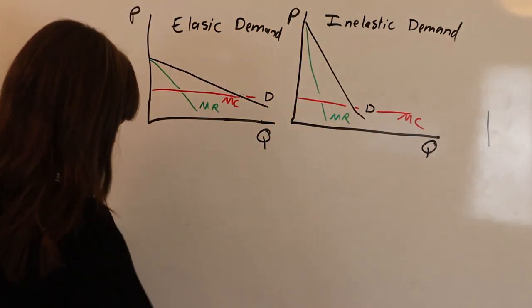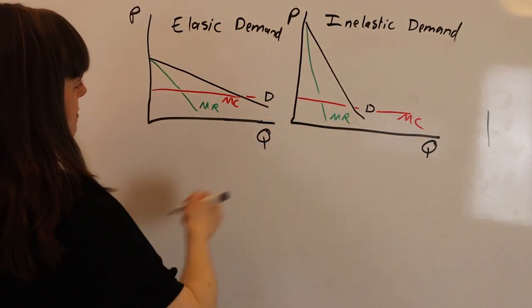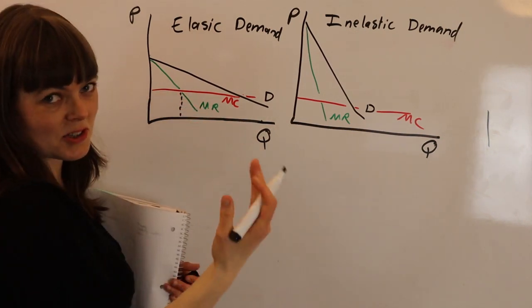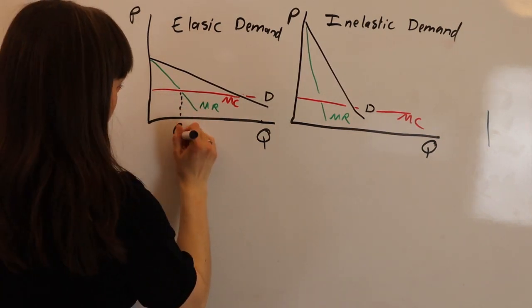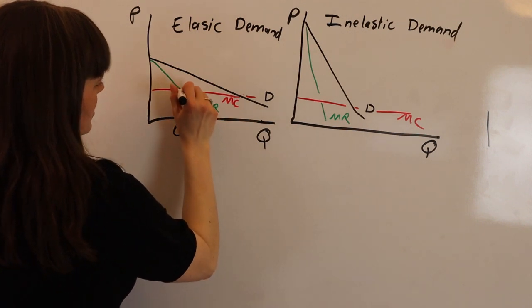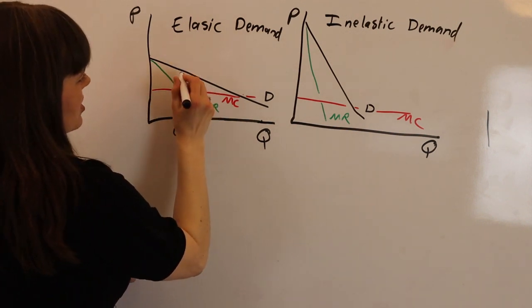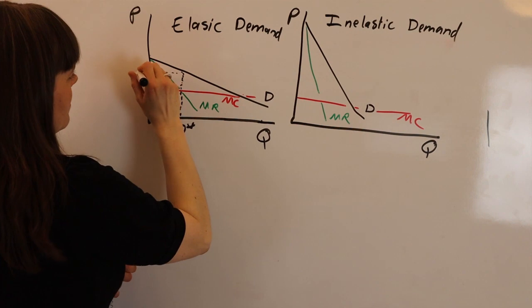And we can find our optimal quantity in both models by setting marginal cost equal to marginal revenue. We've got Q star. We set our price as high as possible, which is up on the demand curve, P star.